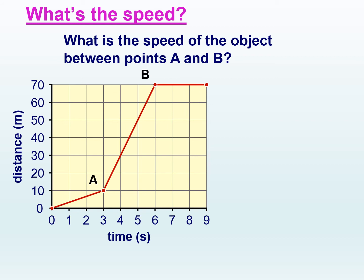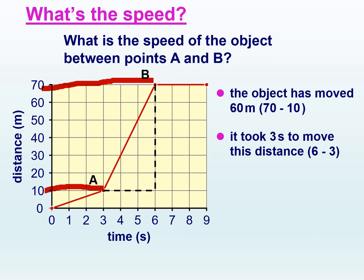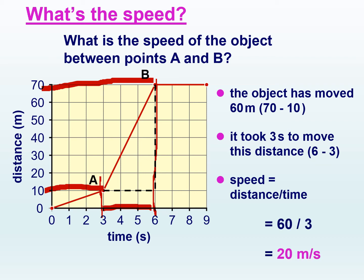Calculating the speed of an object from a distance-time graph: what's the speed between points A and B? At point A the object had already covered 10 meters; by point B it was at 70 meters. In terms of time, at point A it had taken 3 seconds; by point B it had taken 6 seconds. So speed equals distance divided by time: 60 meters divided by 3 seconds equals 20 meters per second.